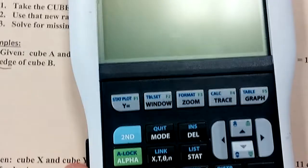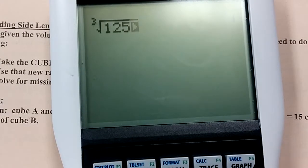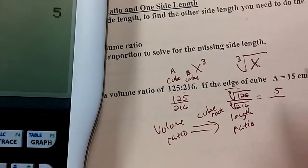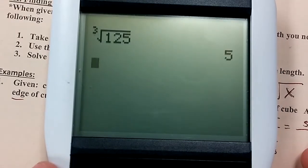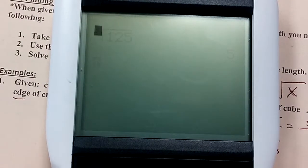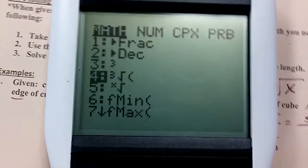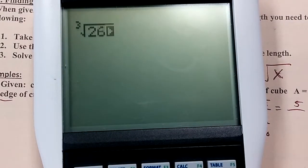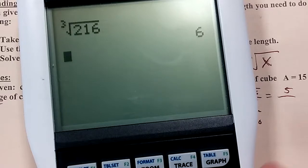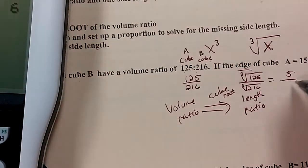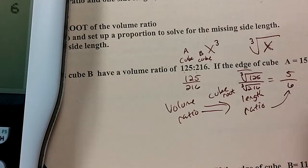So the cube root of 125 is 5, and the cube root of 216 is 6. So this is your length ratio right here.